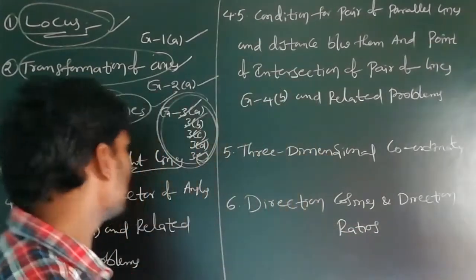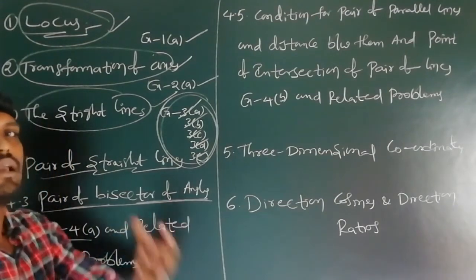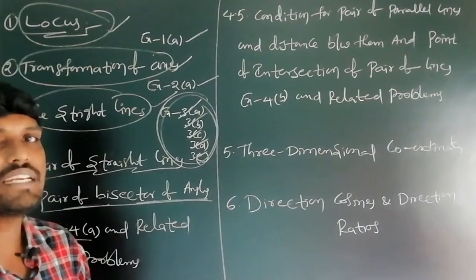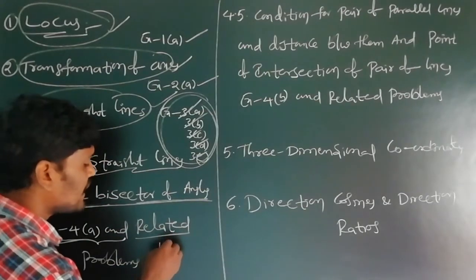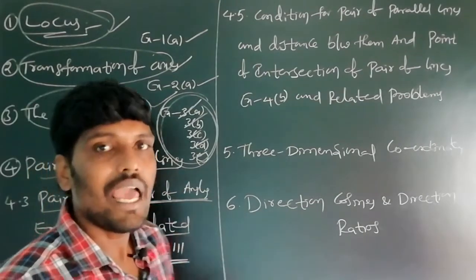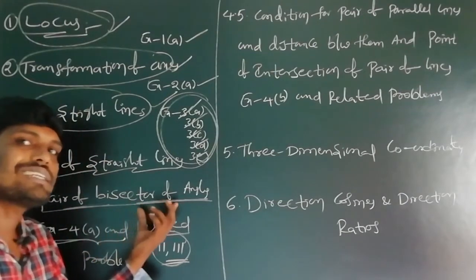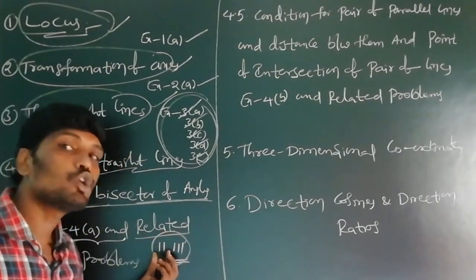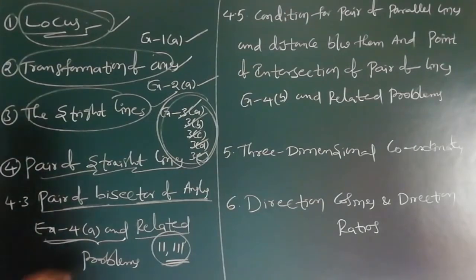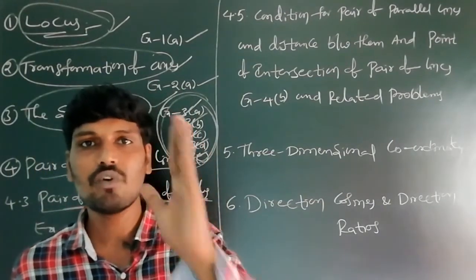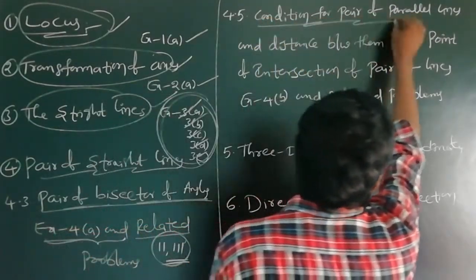In Pair of Straight Lines, the deleted topic is Pair of Bisector Angles. This topic belongs to Exercise 4a, Section 2 and Section 3. Exercise 4a has a total of three sections, and in sections 2 and 3, some problems related to Pair of Bisector Angles are deleted.